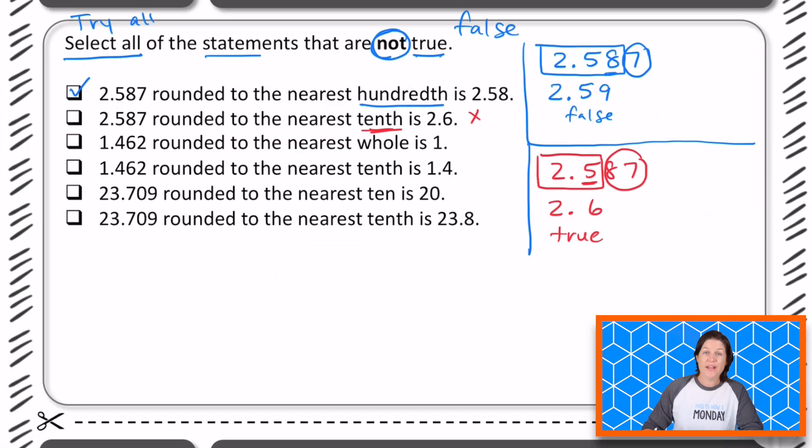All right, now we have 1.462 thousandths rounded to the nearest whole is 1. So what digit is in the whole place? The one, right? We're looking at the ones place for the whole place. So we have one whole and behind it we have 462 thousandths. Halfway would be 500 thousandths. So it's less than halfway, meaning that yes, it rounds to one whole or just one by itself. So this is true. Remember that we're looking for the answers that are not true, so we can eliminate that one.